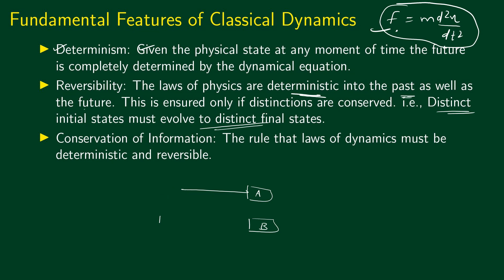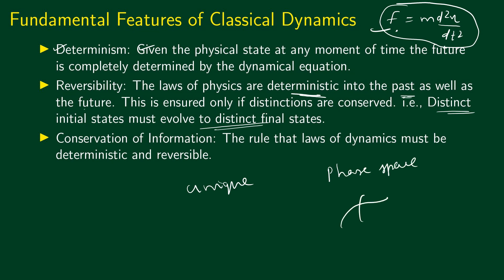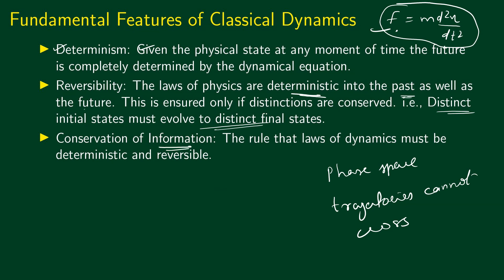The equations of classical mechanics give a unique evolution. Together, determinism and reversibility are called conservation of information. Information conservation is the rule that the laws of dynamics must be deterministic and reversible. Time evolution preserves the information about the system: given state 2, we can also recover state 1. The information available in the specification of state 1 is also available in the specification of state 2.